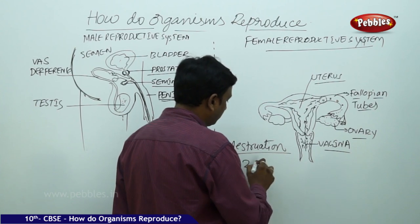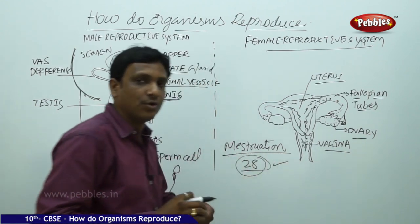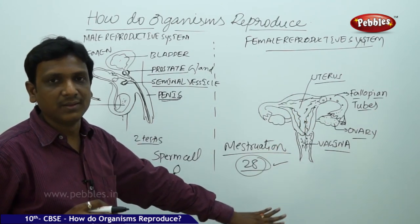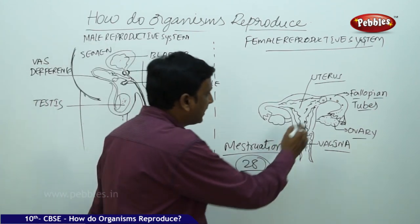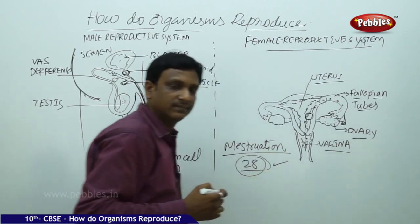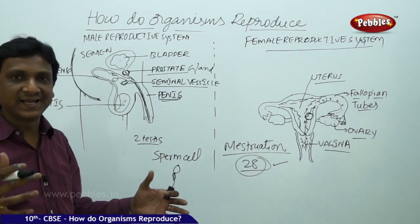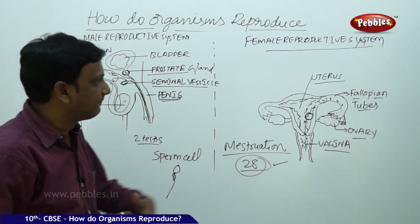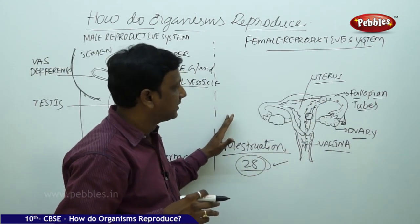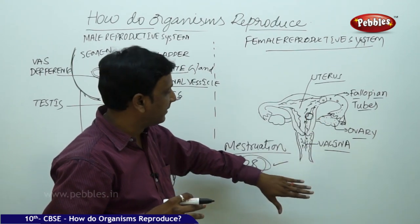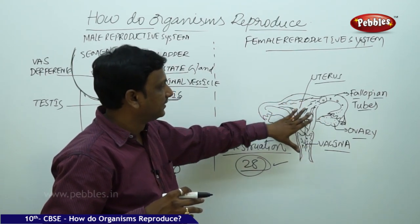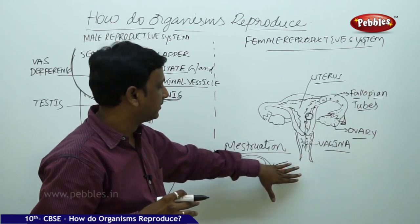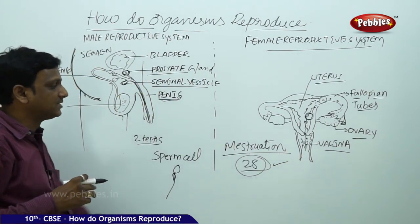Menstruation takes place in a cycle of 28 days if there is no fertilization. If fertilization takes place, menstruation stops until the baby is born. The fertilized zygote is fixed in the uterus and grows into a baby. The uterus is a bag-like structure which provides all the layers and fluids for growth of the baby. Once fertilization takes place, menstruation stops; if there is no fertilization and no sperm cells for fertilization, all the arrangements made for pregnancy — the lining and everything — are flushed out. That is menstruation, which occurs in a cycle of 28 days and lasts 2 to 8 days.